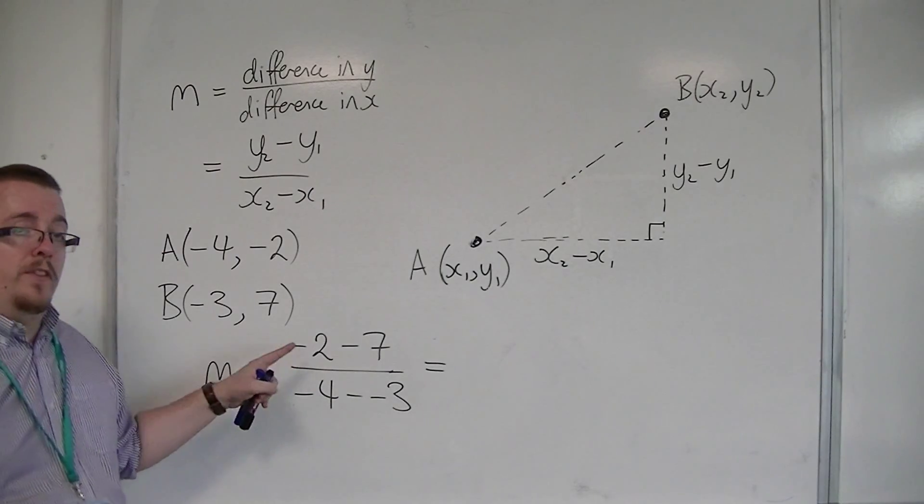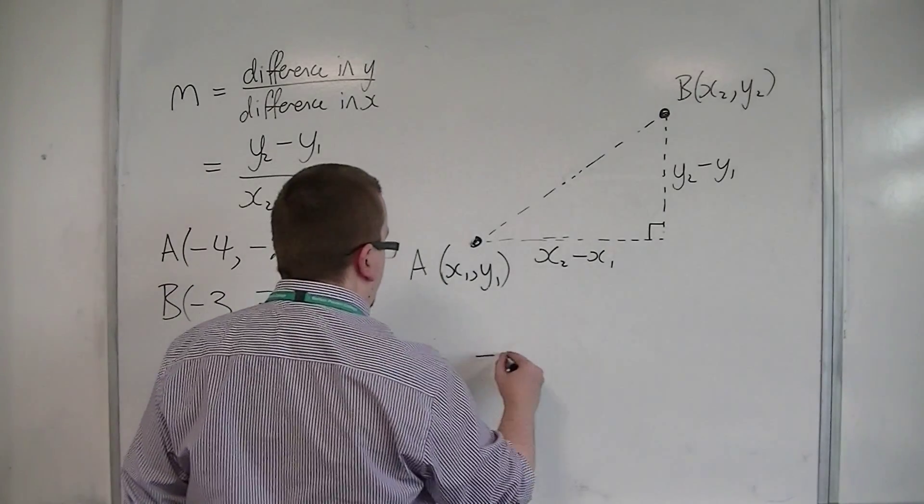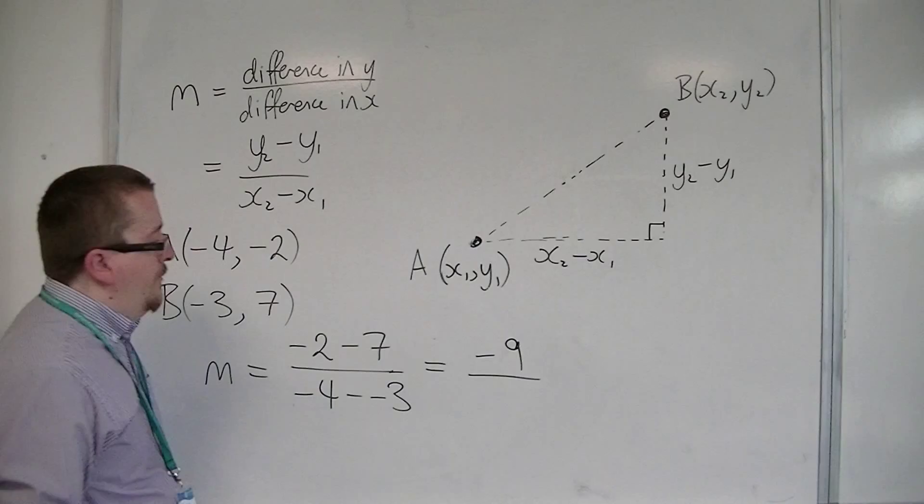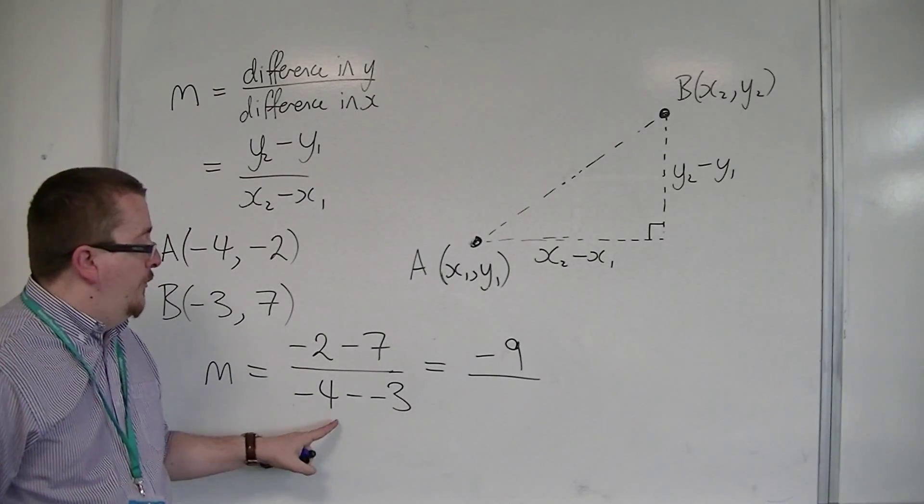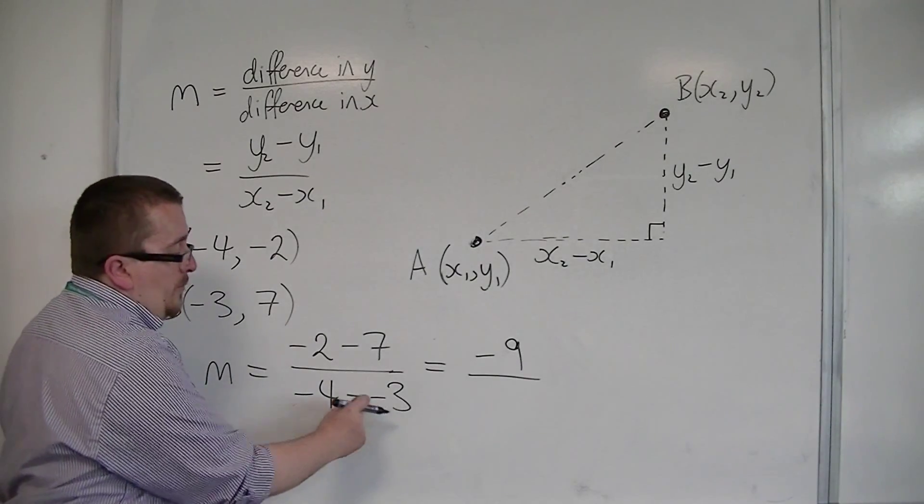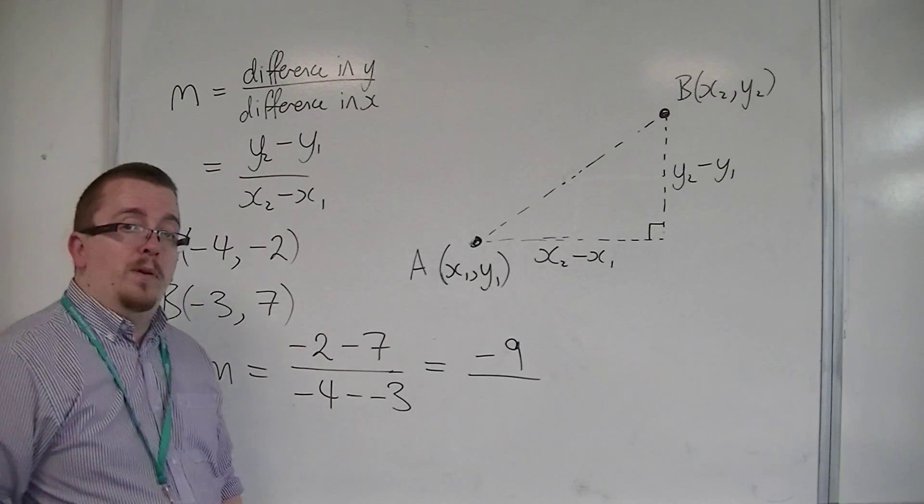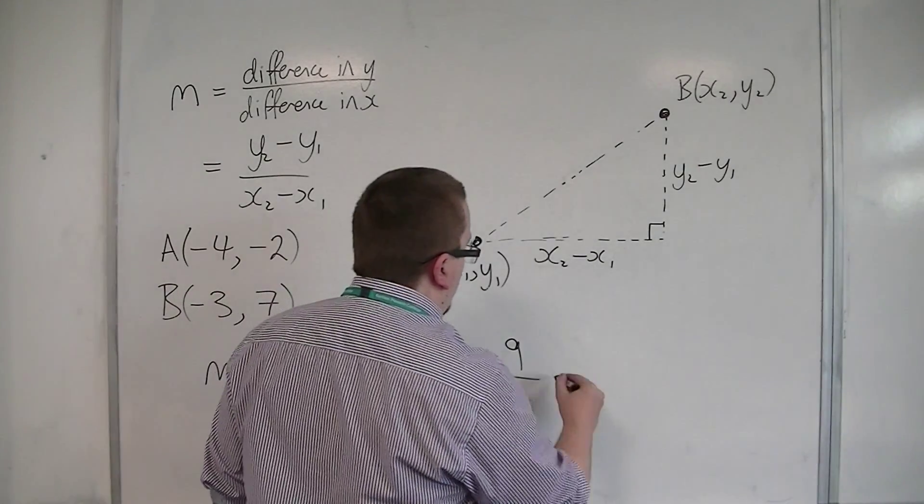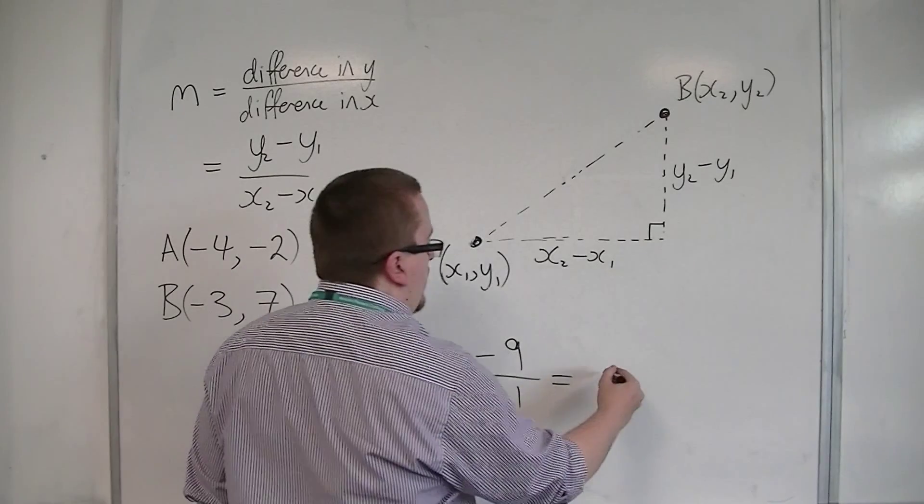Minus 2 take away 7 on the top is minus 9. And for the denominator, we have minus 4 take away minus 3. The 2 minuses become a plus, so minus 4 plus 3 is minus 1. So minus 9 divided by minus 1 is just 9.